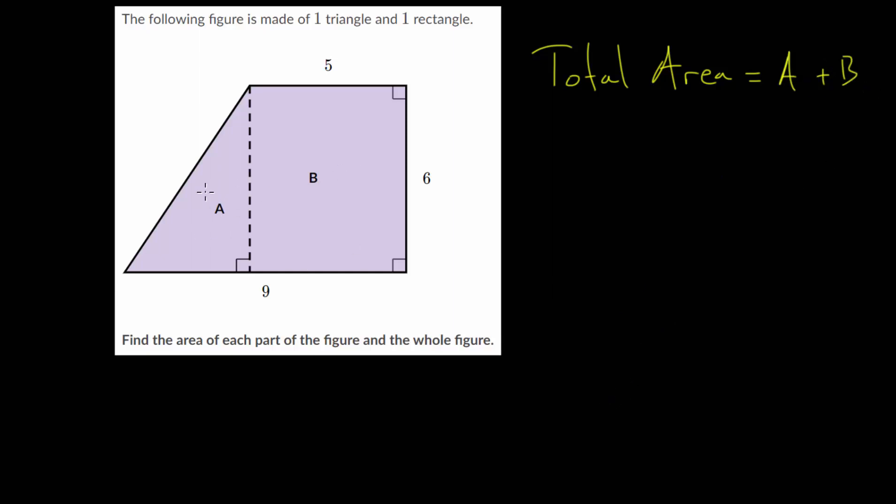Let's start with A, since this one might be a little bit more confusing to find. Since this is a triangle, we're going to take half the base and multiply it by the height. Now the height you can see is six, because this length is six, and so this length here would be six as well. But the base is a little bit more difficult to get.